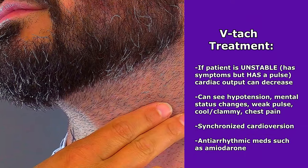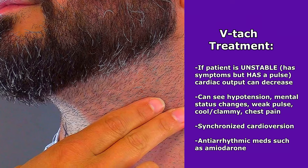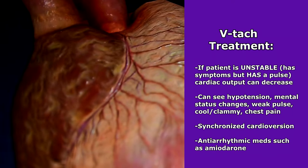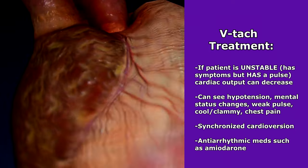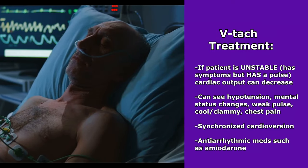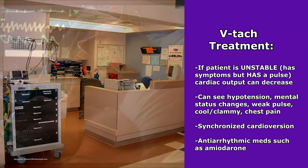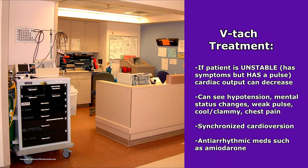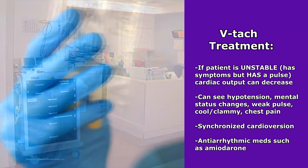But if your patient is unstable — meaning they're having symptoms but still have a pulse — their symptoms will revolve around decreased cardiac output. Because when the ventricles are pumping like this, they're not pumping very well. So cardiac output will fall, and you'll start to see hypotension, mental status changes, a weak pulse, cool and clammy skin, and chest pain. For this, synchronized cardioversion can be used to put them back into a normal rhythm, followed up with an antiarrhythmic like amiodarone.